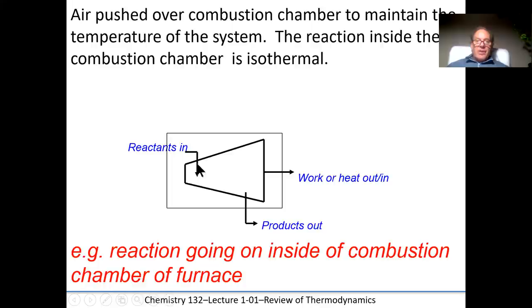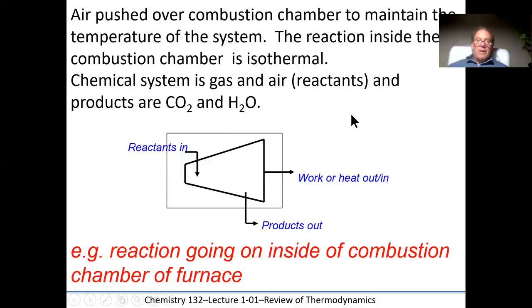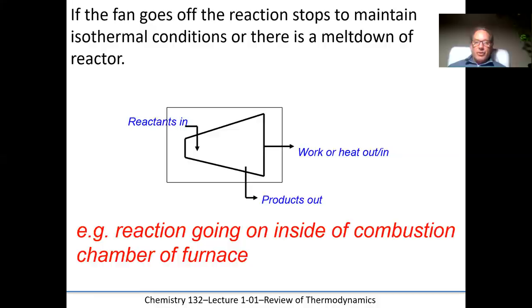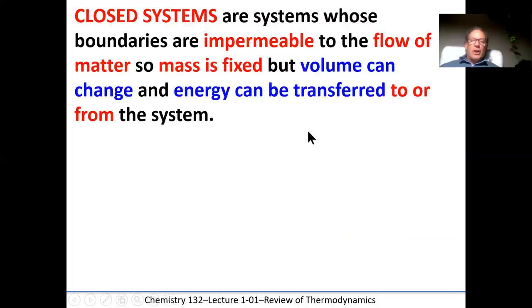Air is pushed over that combustion chamber to maintain a constant temperature of the system, making the reaction isothermal. If the heat was allowed to keep building up, the furnace would melt. The natural gas — mainly methane, CH4 — combines with oxygen making CO2 and H2O. If the fan goes off for any reason, the furnace has to shut down to prevent a meltdown. So there's a built-in safety measure.